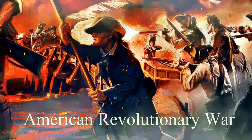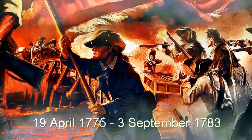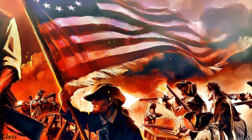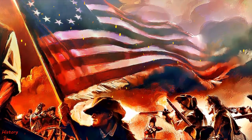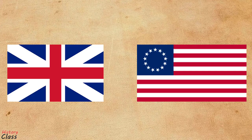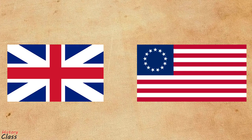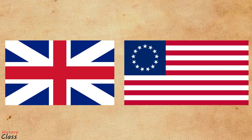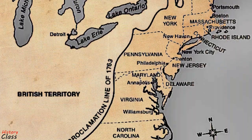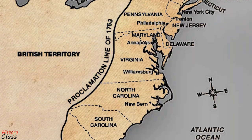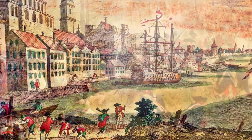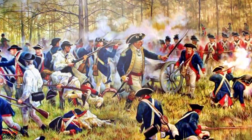The American Revolutionary War, also referred to as the American War of Independence and as the Revolutionary War in the United States, was a conflict between Great Britain and those 13 of its North American colonies which, after the onset of the war, declared independence as the United States of America. Stay tuned to find more about the causes of the war, the main battles, and the aftermath.